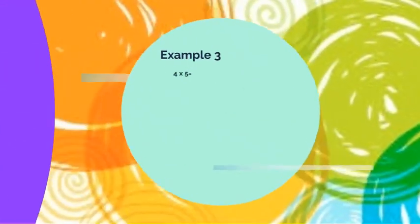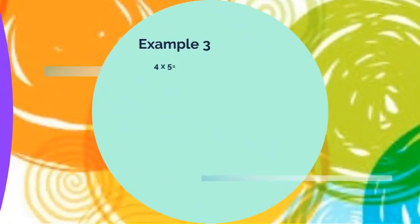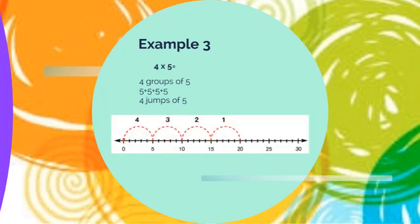Let's try with another example. Four times five. Four groups of five, which is four jumps of five, which equals to 20. Fantastic job.